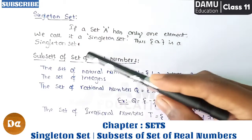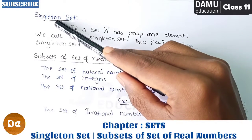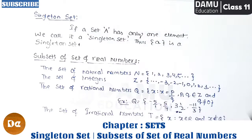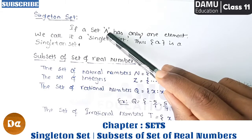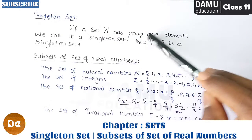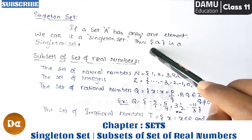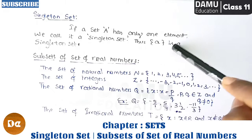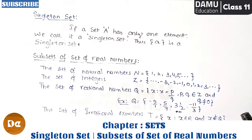So what is a singleton set? The word itself is telling us: single, only one element, one object, one member in a set. If a set A has only one element, we call it a singleton set. Thus, only one element should be contained — that is a singleton set.